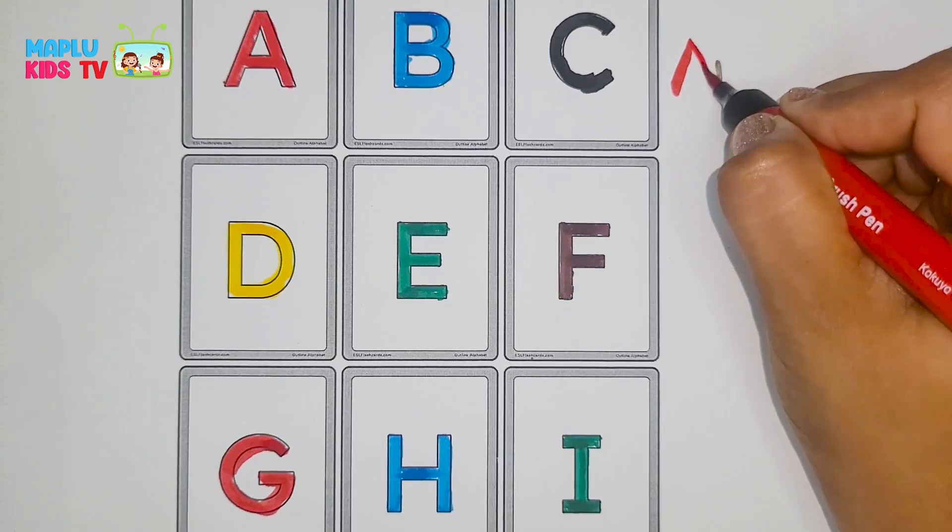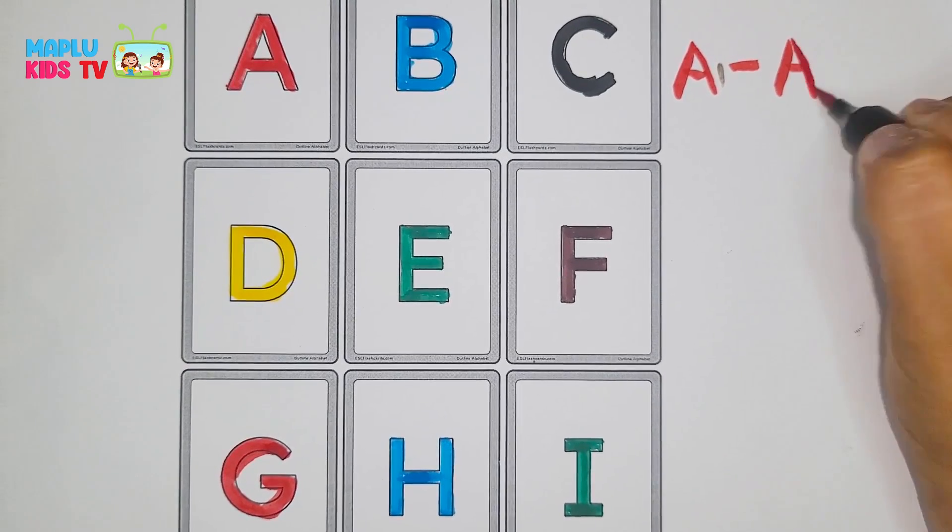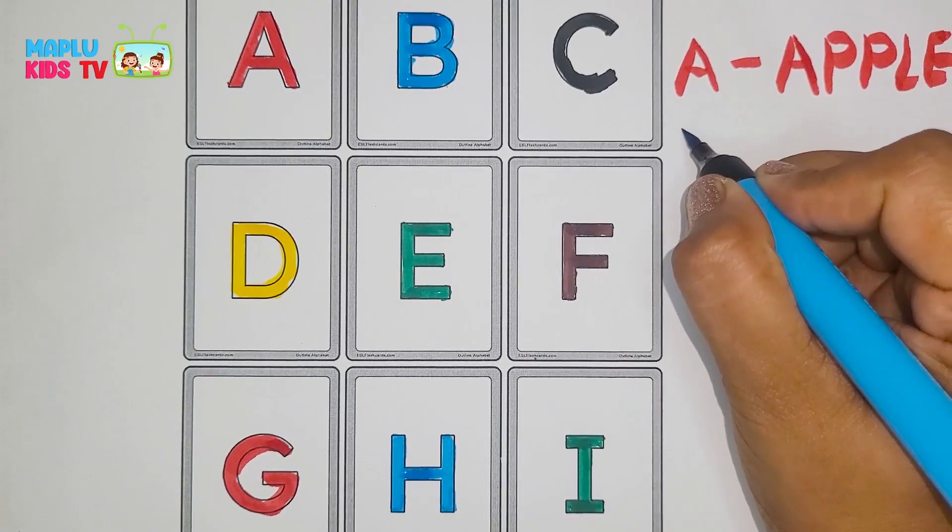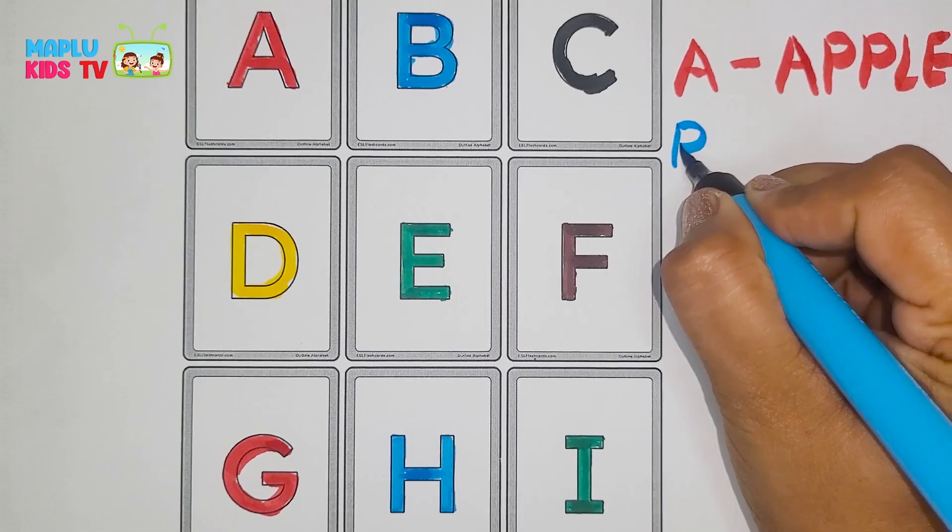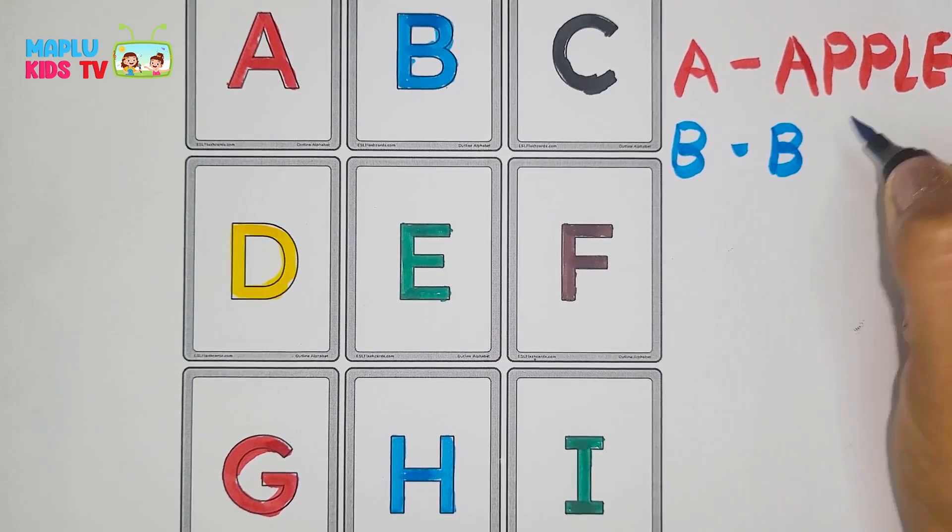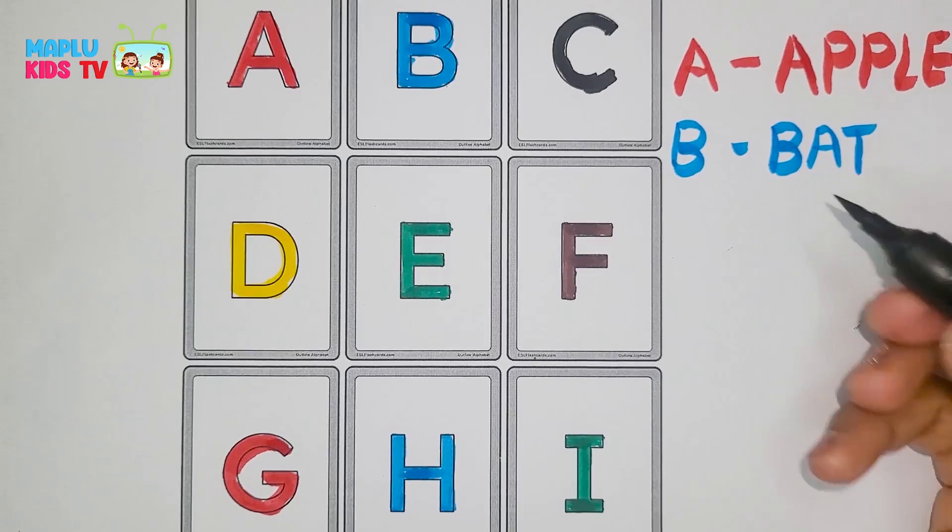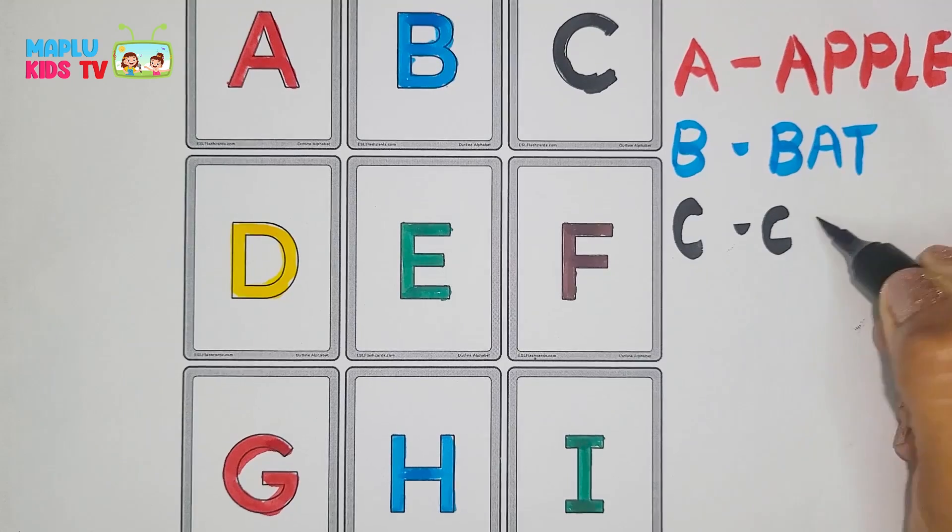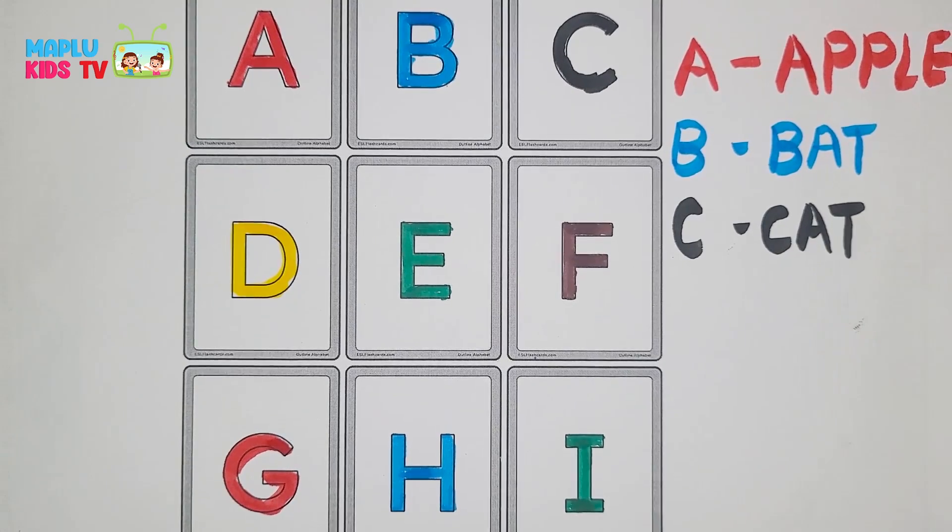A for apple. A double P L E. B for bat. B A T. C for cat. C A T.